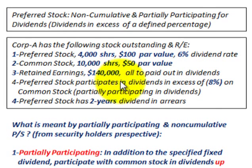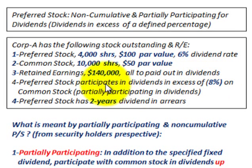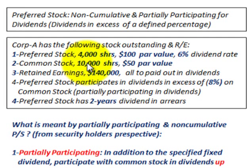The preferred stock participates in dividends in excess of 8% of the common stock, so that's going to be partially participating in dividends. Anything in excess of the 8% that's paid out to the common stock is going to be allocated between the preferred stock and the common stock.